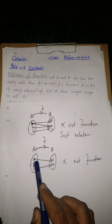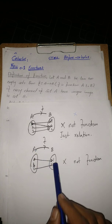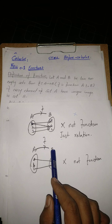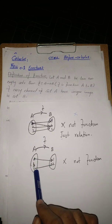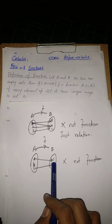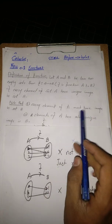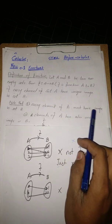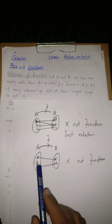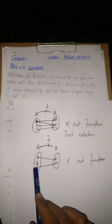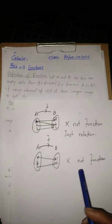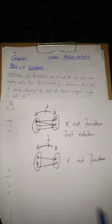In the third example, set A has elements {a, b, c} and set B has elements {1, 2}. We see that a and b have an image inside B, but element b of set A has no image in B. So the first condition is not fulfilled — all elements of A must have an image. Since b is a free element, this is also not a function.